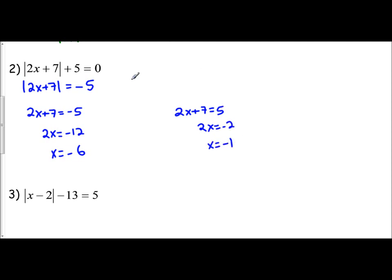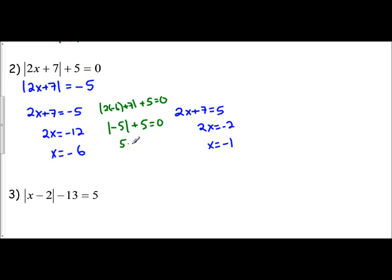Now let's check our answers. Plugging negative 6 into the original equation: 2 times negative 6 plus 7 inside the absolute value, then add 5. 2 times negative 6 is negative 12, plus 7 is negative 5. The absolute value of negative 5 plus 5 should equal 0. The absolute value of negative 5 is positive 5, so we have 5 plus 5 equals 0. Does 10 equal 0? That's not a true statement.